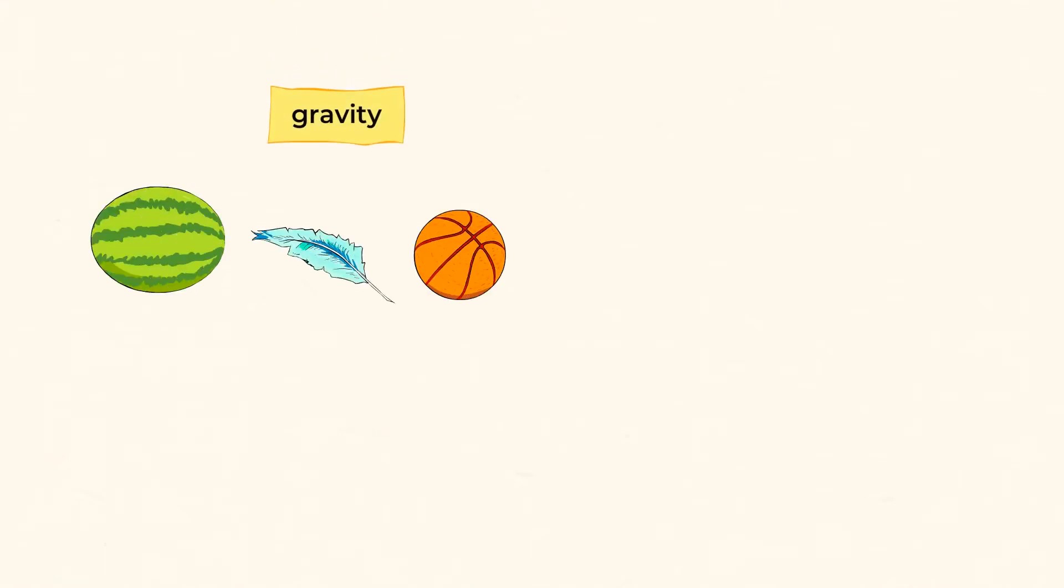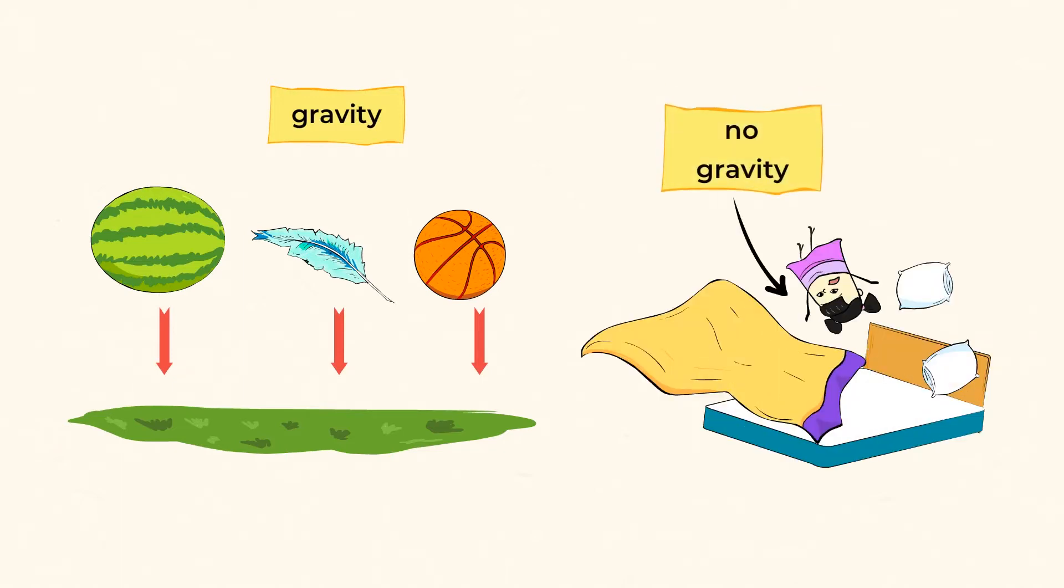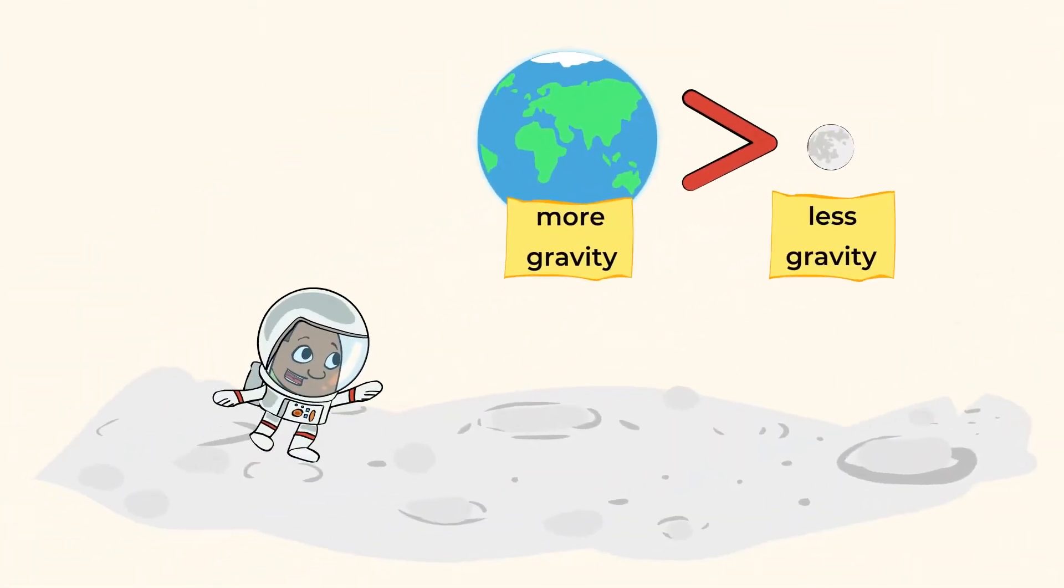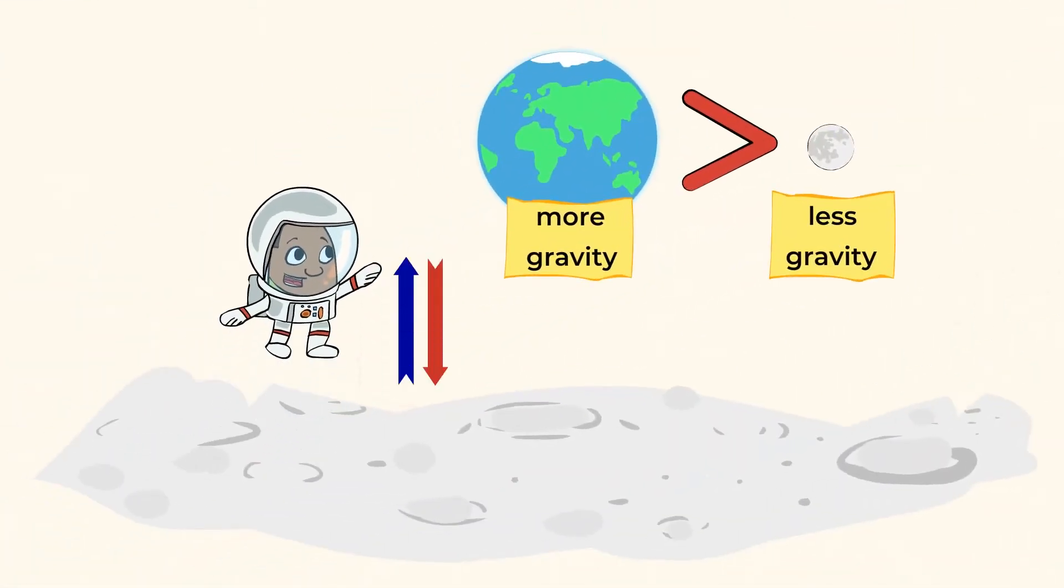Gravity is an invisible force that pulls objects down. Gravity is what keeps us from floating up in the air and away. That's why the astronaut bounces as he walks on the moon. There's less force pulling him down as he walks.